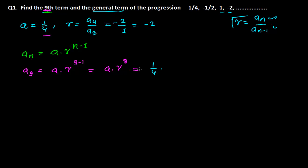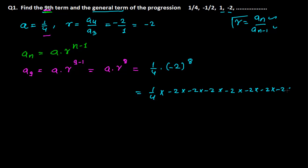So it will be (1/4) × (-2)^8. Let me expand (-2)^8 — that's 2 multiplied eight times. The 1/4 means we have 1 over (2×2), so two of those twos cancel out, leaving six twos. Then: 2×2=4, 4×2=8, 8×2=16, 16×2=32, 32×2=64. So we get the value 64.